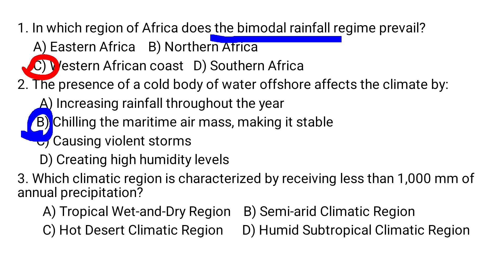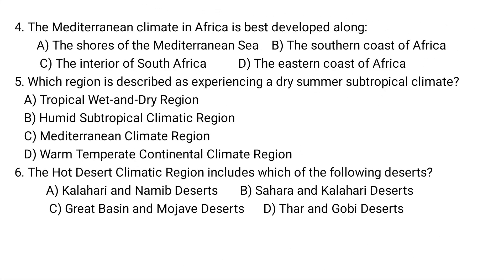Question number three: Which climatic region is characterized by receiving less than 1,000 millimeters of annual precipitation? A. Tropical wet and dry region. B. Semi-arid climatic region. C. Hot desert climatic region. D. Humid subtropical climatic region. The tropical wet and dry region — also known as the savannah — receives more than 1,000 mm, so that is not the answer.